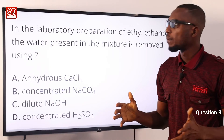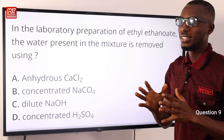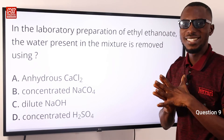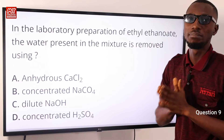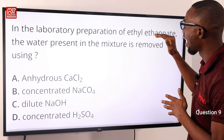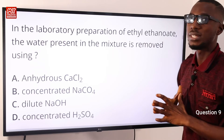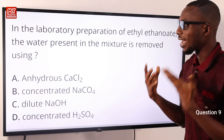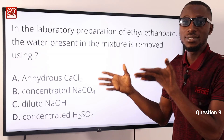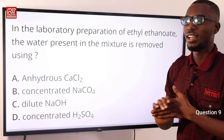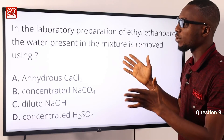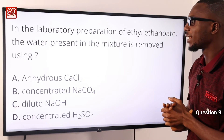Question nine: in the laboratory preparation of ethyl ethanoate, the water present in the mixture is removed using what? Recall that ethyl ethanoate is obtained from the reaction between ethanoic acid and ethanol to form an ester. The distillate still contains impurities like unreacted ethanol, acid, water, and ethyl ethanoate. Anhydrous calcium chloride is added and left for about a day so it can remove water from the mixture. The correct option is option A: anhydrous calcium chloride.